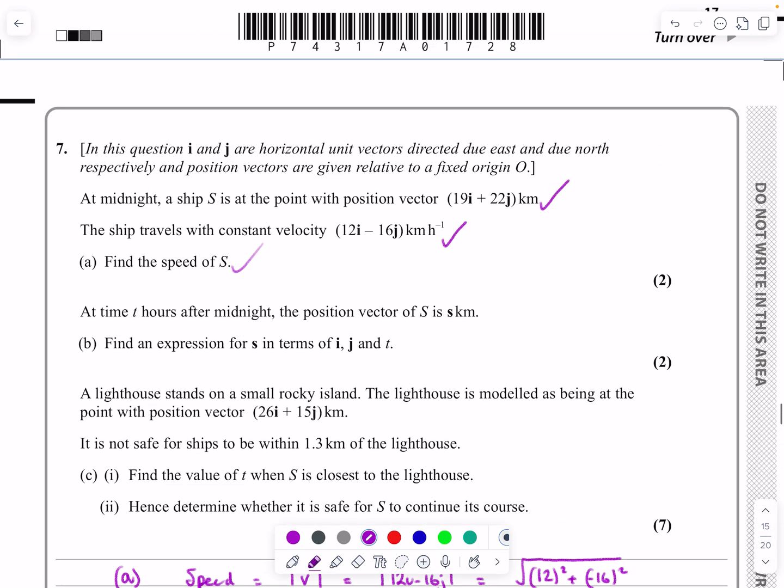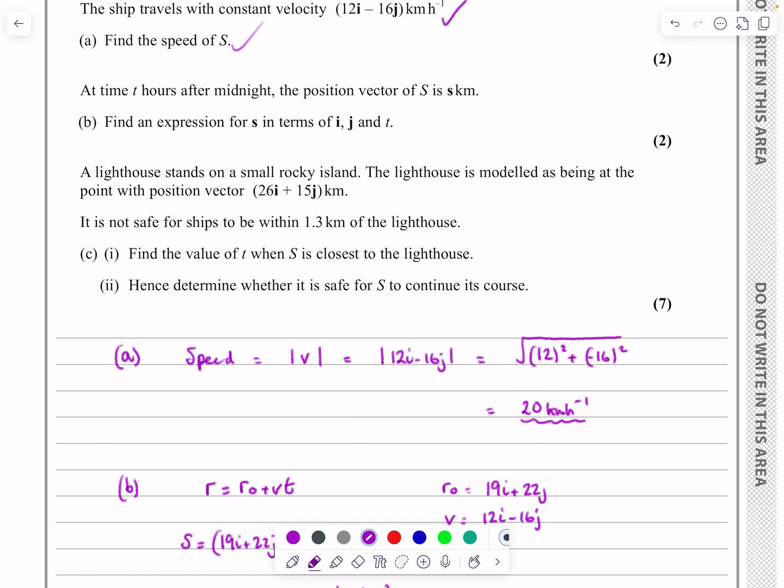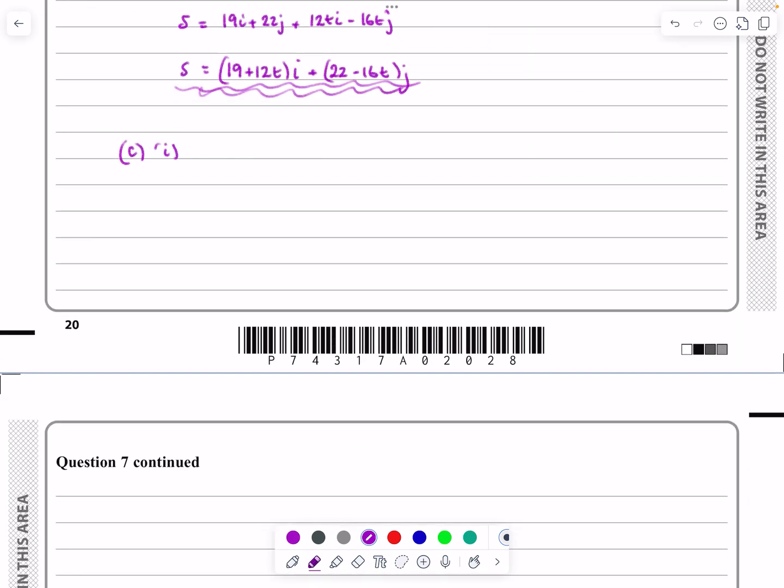Okay, part c. What does it ask me for for part c? It says, okay, we've got this situation. A lighthouse stands in a small rocky island position vector there. Lighthouse obviously isn't going to move. And it says it's not safe for ships to be within 1.3 kilometers of that. Okay, that's for part two. But it does say, find the value of t when s is closest to the lighthouse. So here, even if I hadn't already drawn anything else out, I probably would try and draw a quick sketch to see what's going on with this one. Don't take ages of it. It doesn't need to be perfect. I've sort of got some parts that I know.